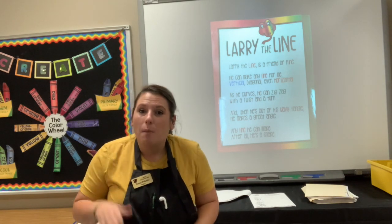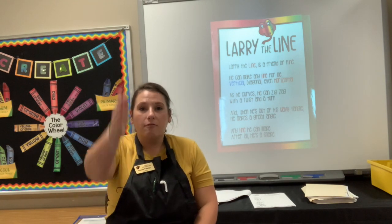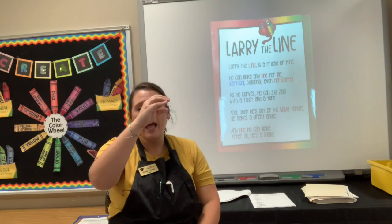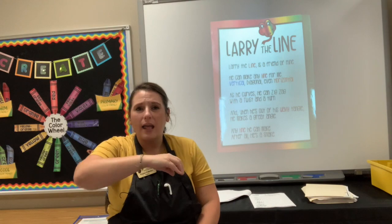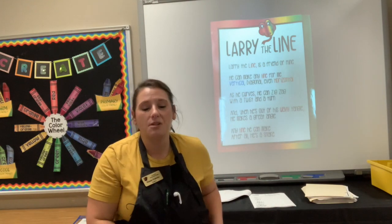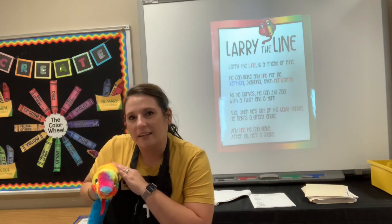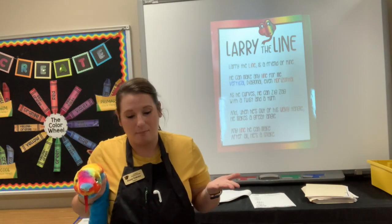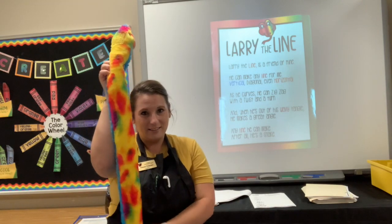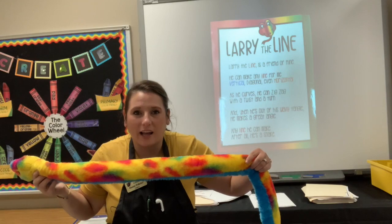Let's do it one more time, but I want you to help me. When we're making vertical lines, get your Larry out, make a vertical line, a diagonal line, a horizontal line, and then make your wavy lines. Let's do this together. Larry the Line is a friend of mine. He can make any line for me. He can make a vertical line, a diagonal line, and a horizontal line.